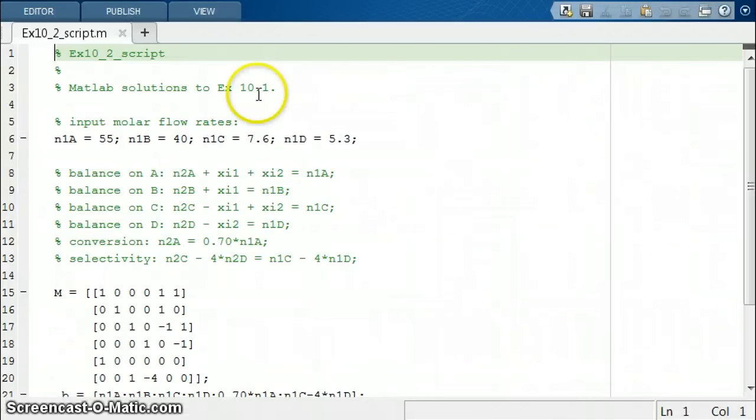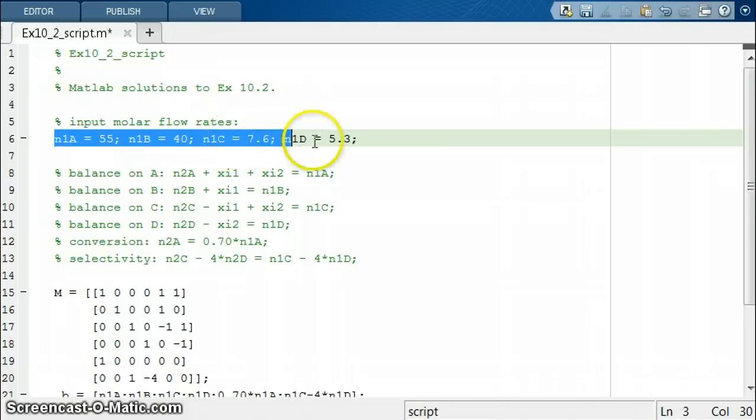So in this script, this is supposed to be 10.2, we have our input molar flow rates shown here. And I've also, in the comments section, written out all of the equations that we're solving for.